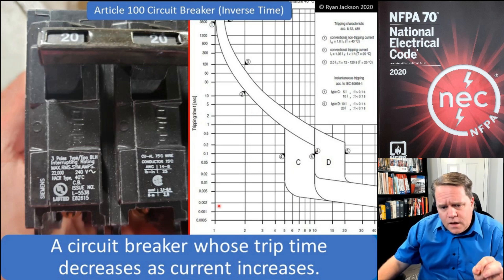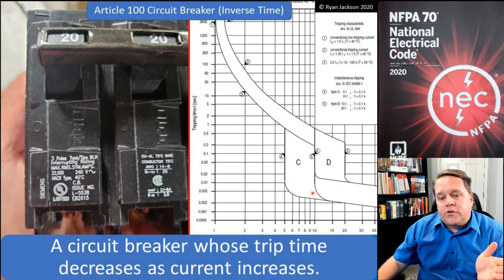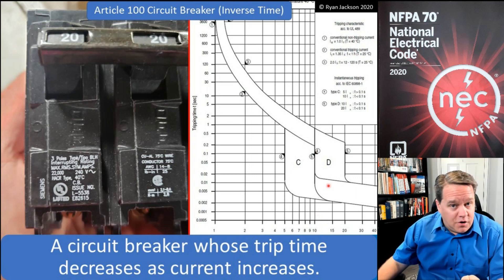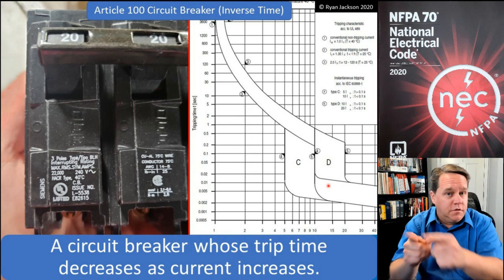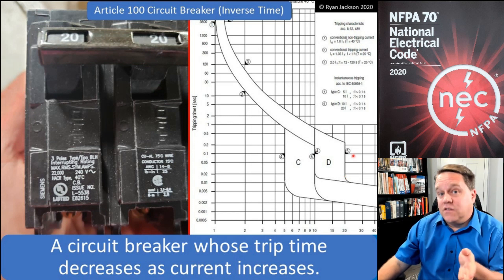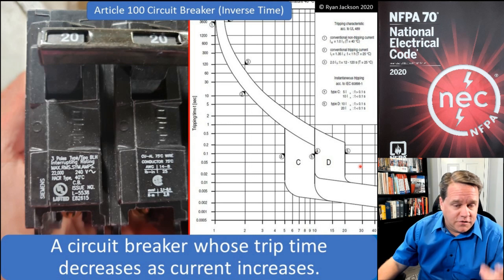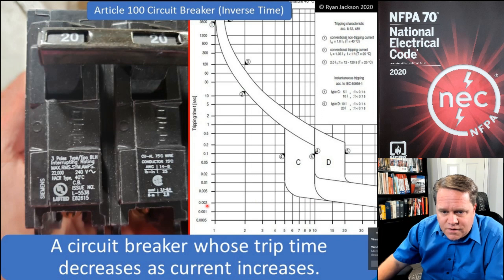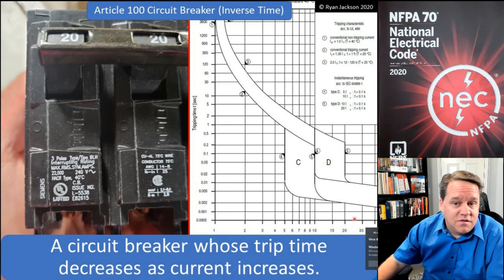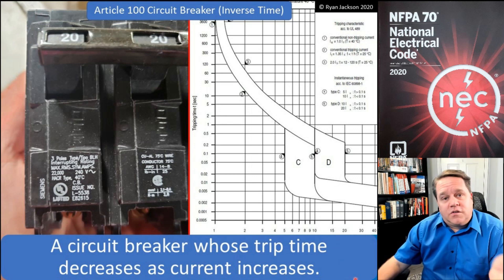If I show this breaker 10 times its rating — 200 amps — we're now in the magnetic part of the circuit breaker, no longer on the bimetal thermal overload part. That's where we start measuring things not in seconds but in cycles or fractions of a cycle. At 200 amps on a 20-amp breaker, it'll trip at around 0.002 seconds. So you get the idea: trip time decreases as current increases — that's our inverse time circuit breaker.